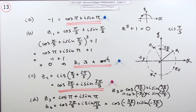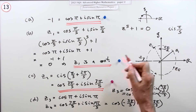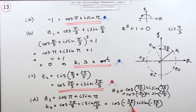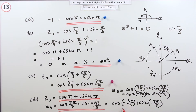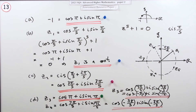So by adding 2π/5 each time and then converting to principal arguments, we get all five roots. There were two marks for that part — one for getting at least one correct, and one more for getting the remaining two.